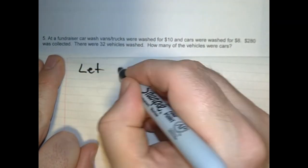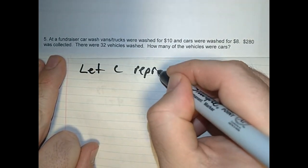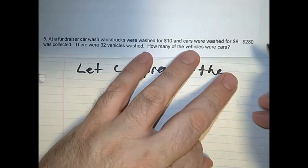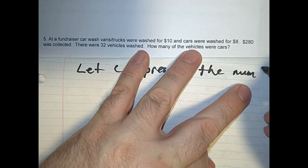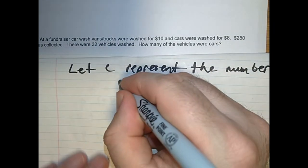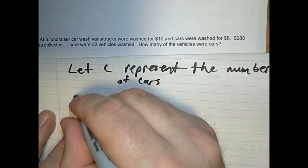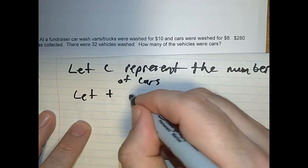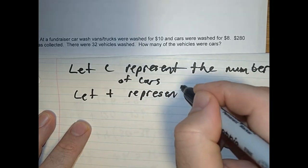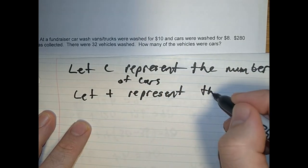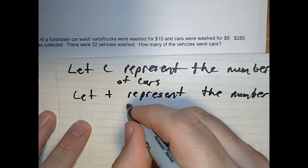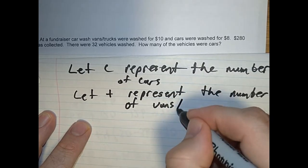Let C represent the number of cars. Let T represent the number of trucks and vans, the number of vans, trucks.